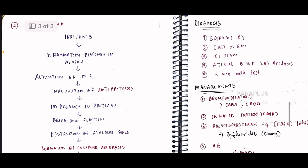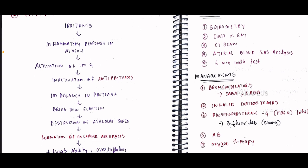In emphysema, the pathophysiology begins with irritants such as smoking triggering an inflammatory response in the alveolar air sacs. This activates immune cells. There is then inactivation of anti-protease enzymes in the air sac.